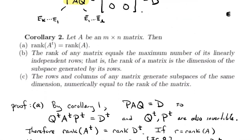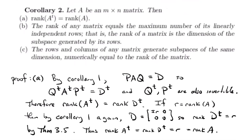The second corollary has three parts for an M by N matrix. First, the rank of the transpose of the matrix equals the rank of the matrix itself. As a consequence, the rank of any matrix is also the maximum number of linearly independent rows — we already proved it was the maximum number of linearly independent columns, but we can also use rows. So it's the dimension of the subspace generated by its rows. And then the row space and column space — the subspaces generated by the rows and columns — have equal dimension, and that dimension is the rank.